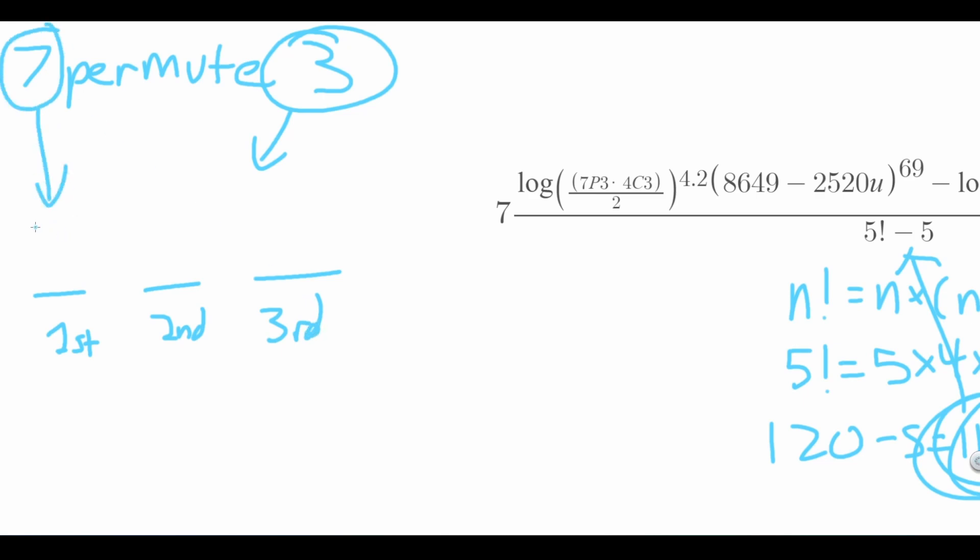We want to know how many different possible combinations there are for the top three positions. In the beginning, it is possible for all seven people to come in first place. Now, because someone is already in first place, it is possible for only six different people to come in second place. Similarly, there can only be five possible people to come in third place. That means that the number of different combinations for the first three people is seven times six times five, which gives us 210.